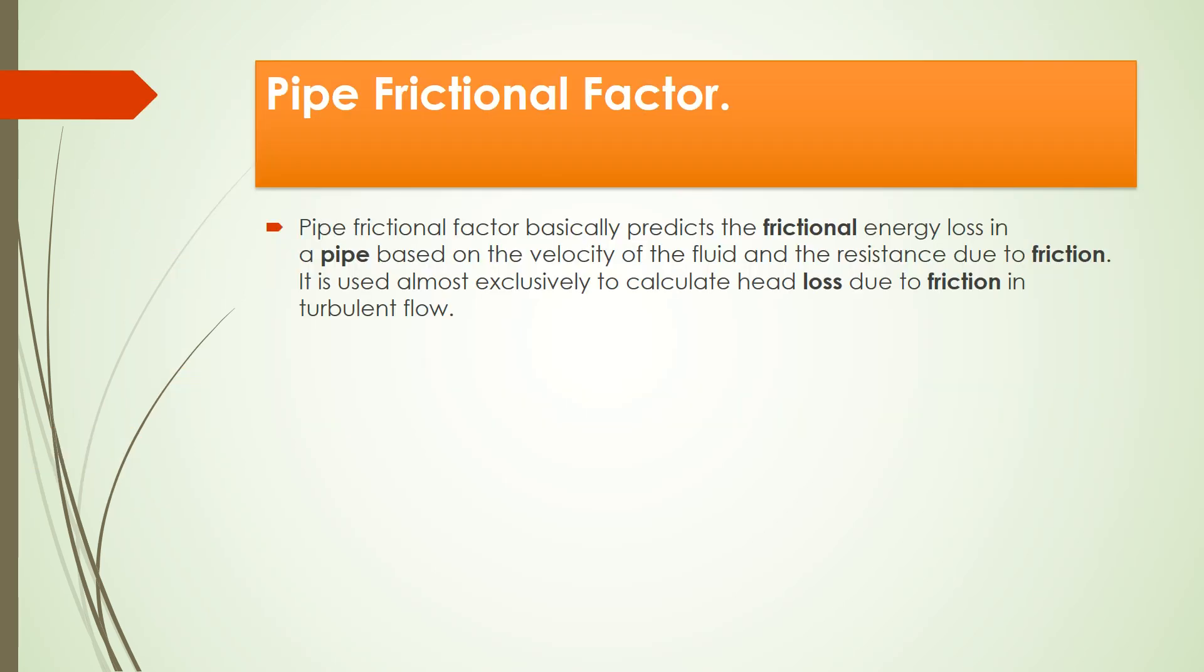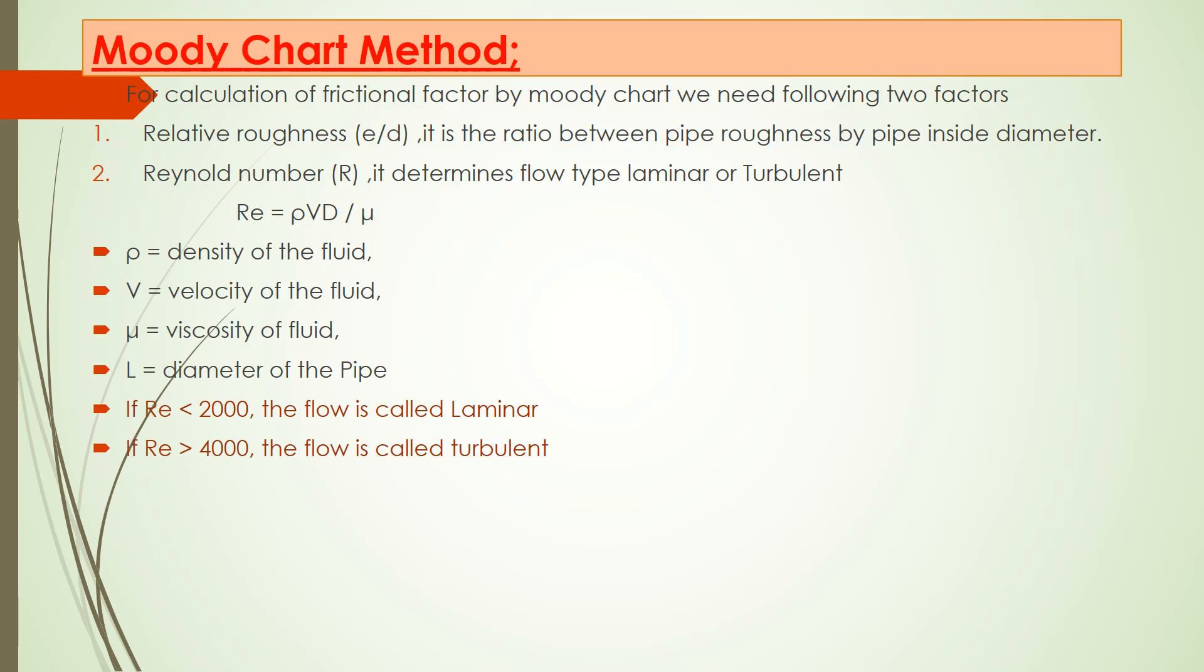A friction factor basically predicts frictional energy loss in a pipe. How you calculate it is based on velocity of the fluid and the resistance which is produced due to friction. It is used when you are going to calculate head loss in pipelines or in turbulent flow.